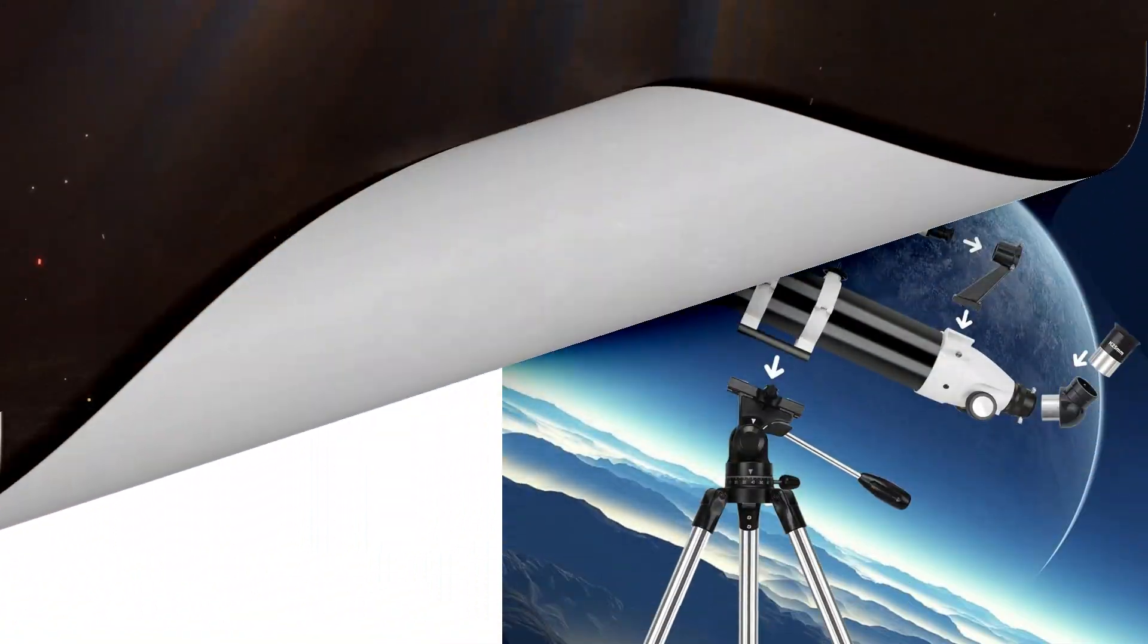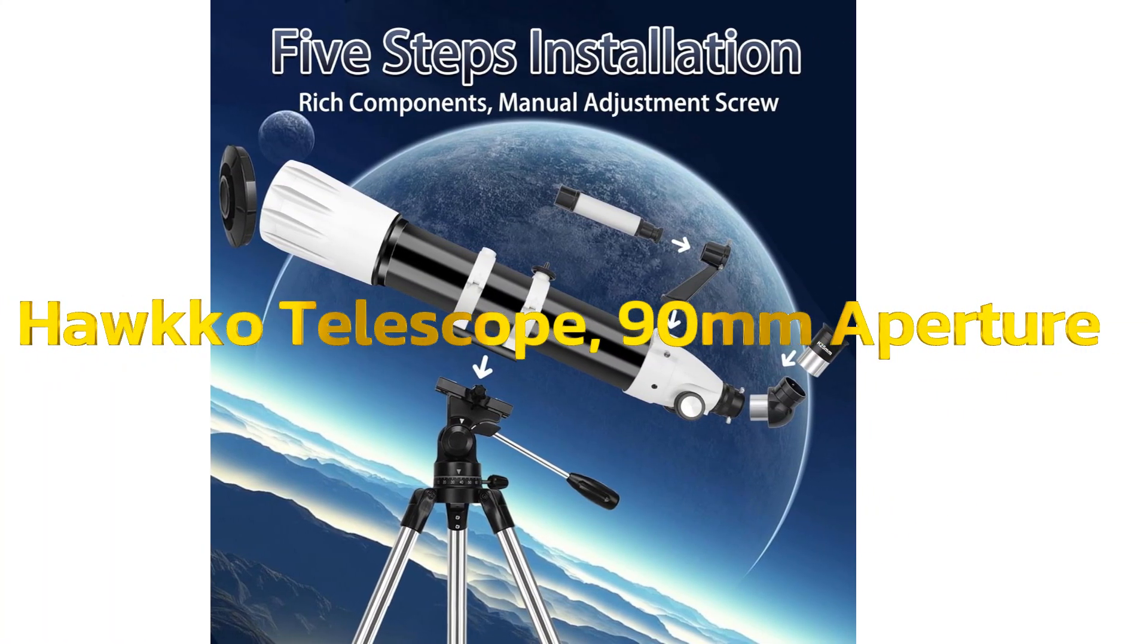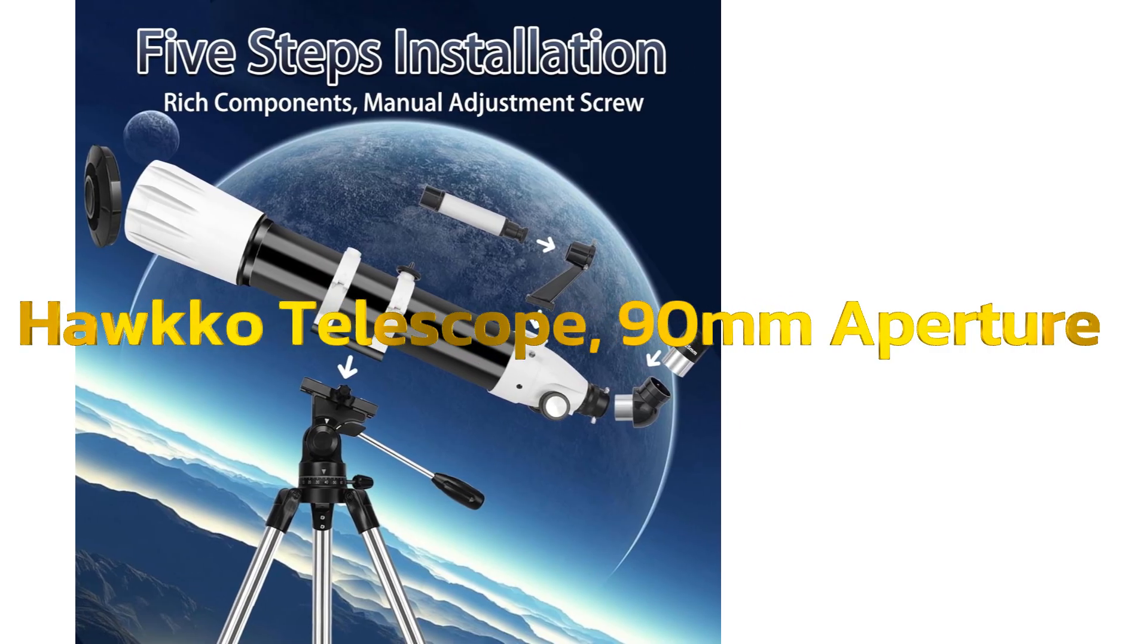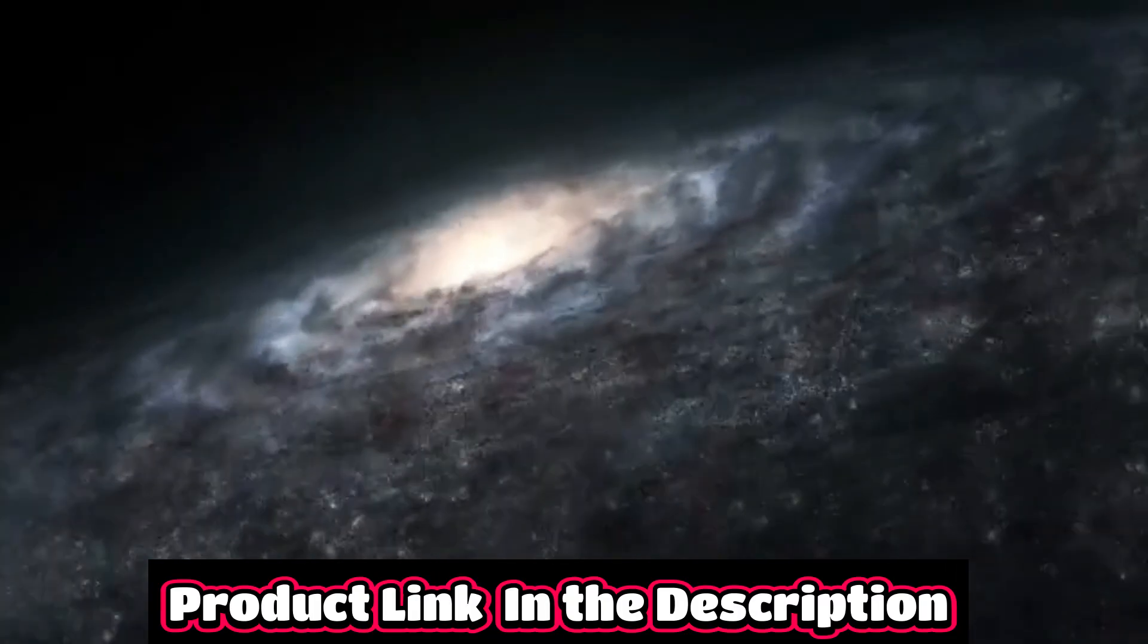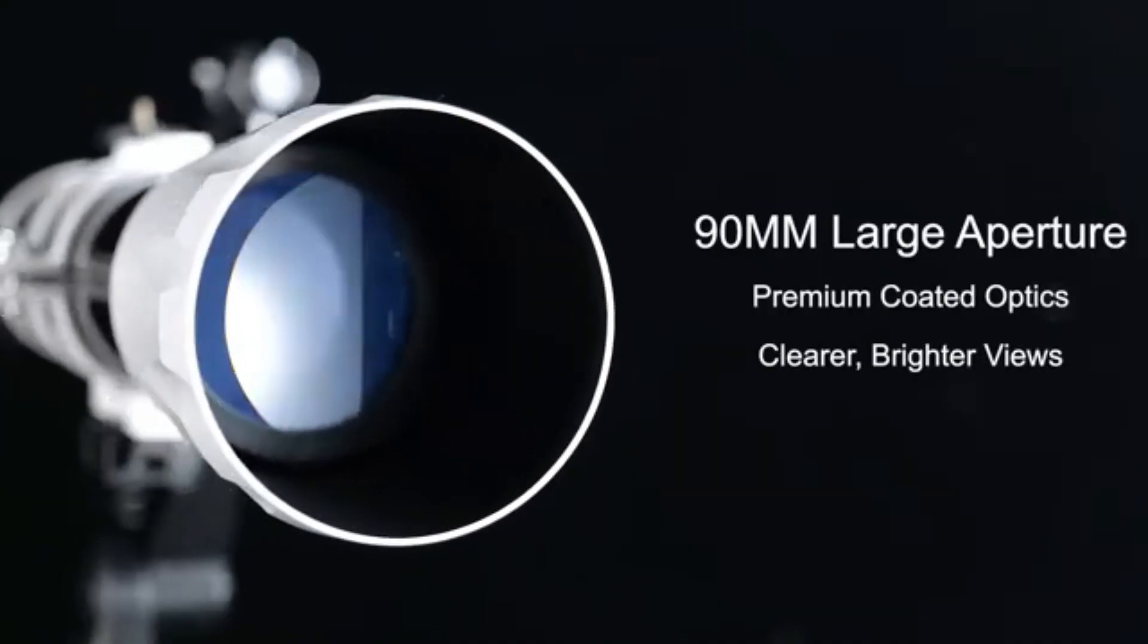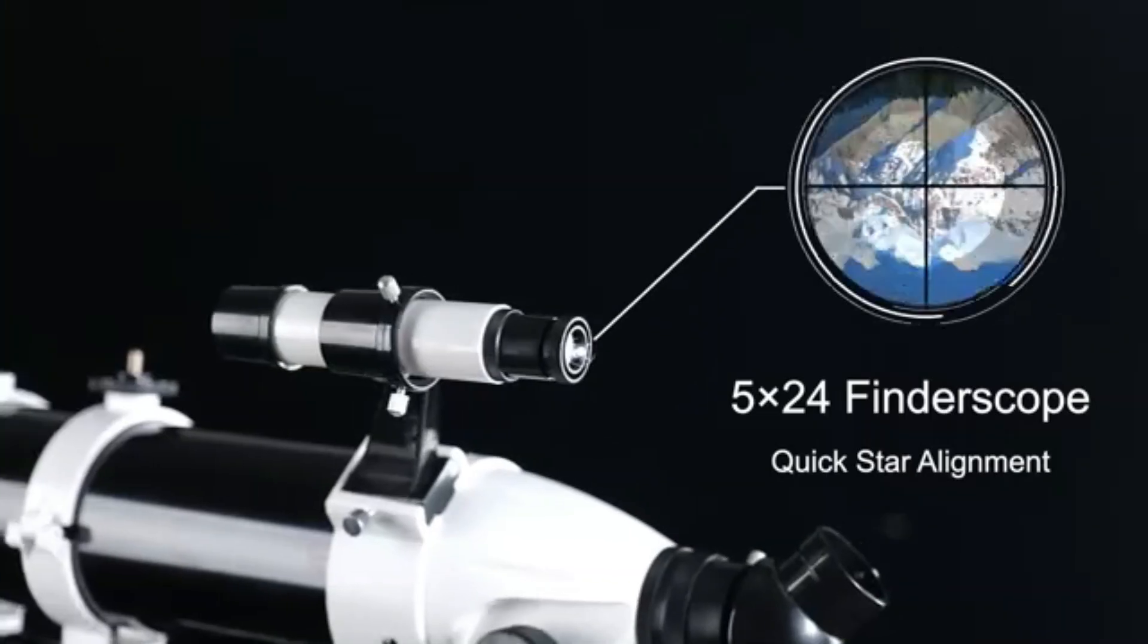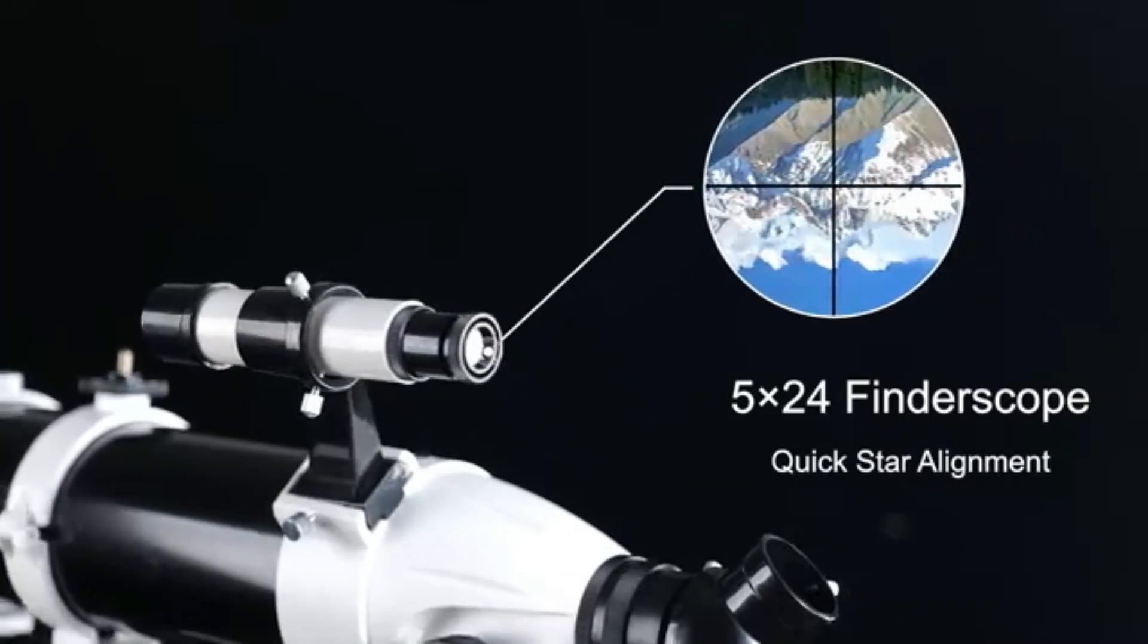Number 3. HACO Telescope, 90mm Aperture, 900mm Astronomical Refractor Telescope for Adults High Powered, Multicoded Professional Telescopes for Astronomy Beginners with AZ Mount, Portable Carry Bag, Phone Adapter. Brand HACO. Model Lane Telescope 90900.